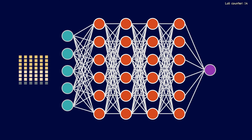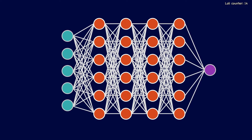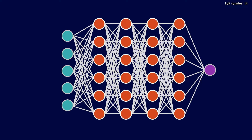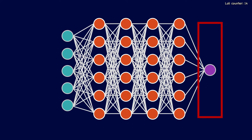We use these 19,200 data points as our input to the model, represented as the input layer. This waifu data then flows through our neural network, going through a number of hidden layers, with each layer picking up features associated with the image — for example edges, textures and simple patterns, along with more abstract high-level features that make up a waifu. We then get to the final layer, known as the output layer, which is responsible for giving us our classification.